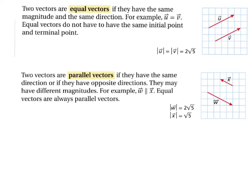Two vectors are parallel if they have the same or opposite directions; they may have different magnitudes. For example, vectors W and X are parallel. Equal vectors are also parallel. Looking at slope, both go down 1 over 2, confirming they are parallel even though their magnitudes differ and they point in opposite directions.